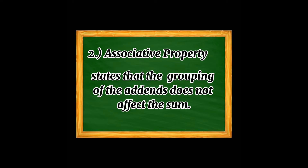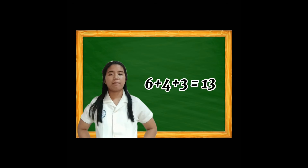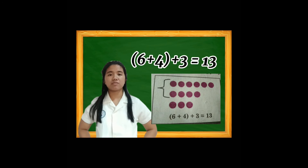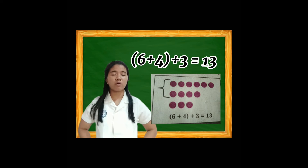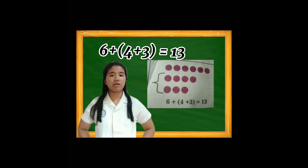Associative property states that the grouping of the addends does not affect the sum. Kahit pa iba-iba yung group ko or kung saan ilalagay yung parentheses, yun pa rin yung sagot na ating makukuha. Tulad ng 6 plus 4 plus 3 equals 13. Kahit ibaguhin natin kung saan nakalagay yung parentheses tulad ng 6 plus (4 plus 3), equals 13 pa rin.